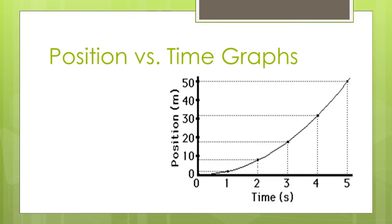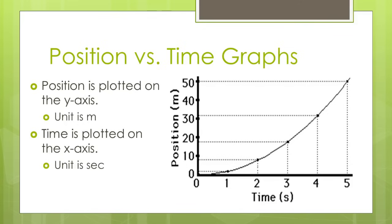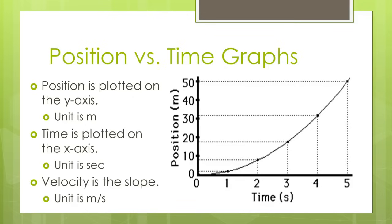The first of our three graphs is the position versus time graph. Position is plotted on the y-axis in meters, and time is plotted on the x-axis in seconds. Velocity is the slope — we know this because rise over run gives us meters over seconds. If we have a unit for the slope of meters per second, that represents velocity.